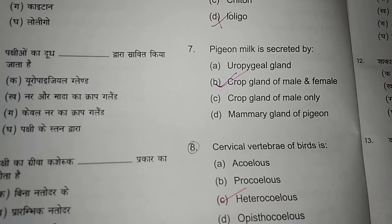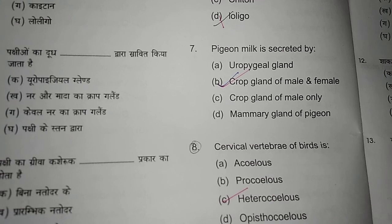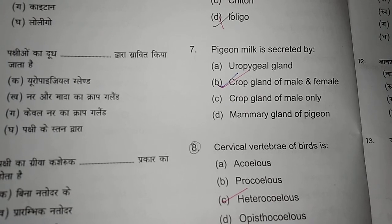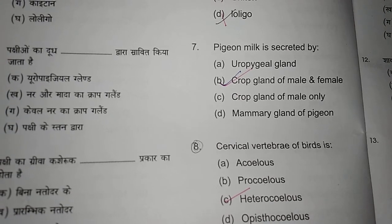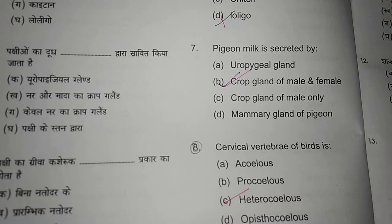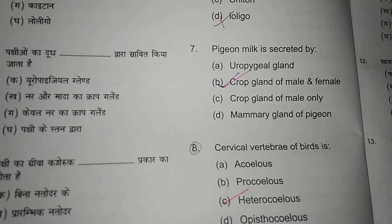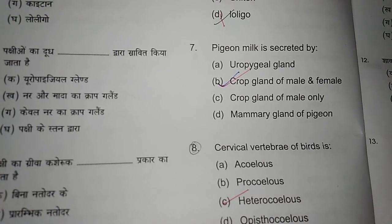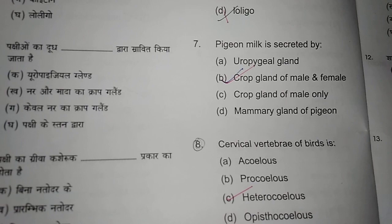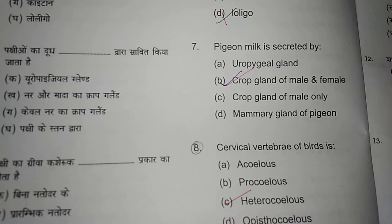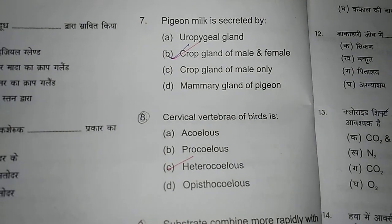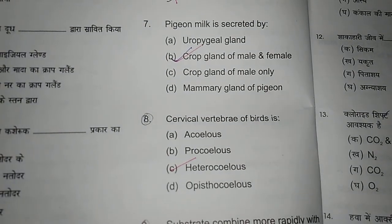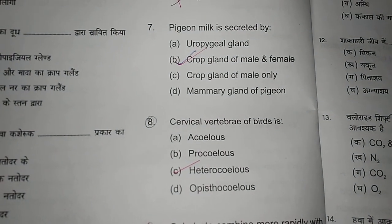Question seven: pigeon milk is secreted by — the answer is the crop gland. Male and female birds have a gland in their neck called the pigeon milk gland or crop gland, which creates milk. It is present in both male and female birds.